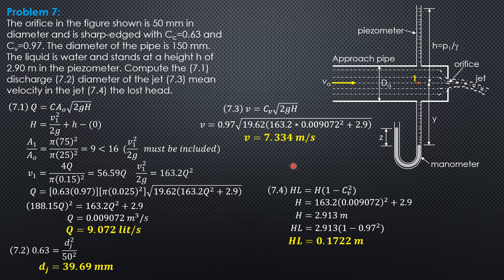What if we ignore the velocity head at 1? Would there be a big discrepancy in the answers? Perhaps for Q, but the correct analysis is we should consider the velocity head at 1 because the ratio of area at 1 to that of the orifice is only 9. Remember, we only ignore velocity head in the approach pipe when the area is greater than 16 times the area of the orifice.